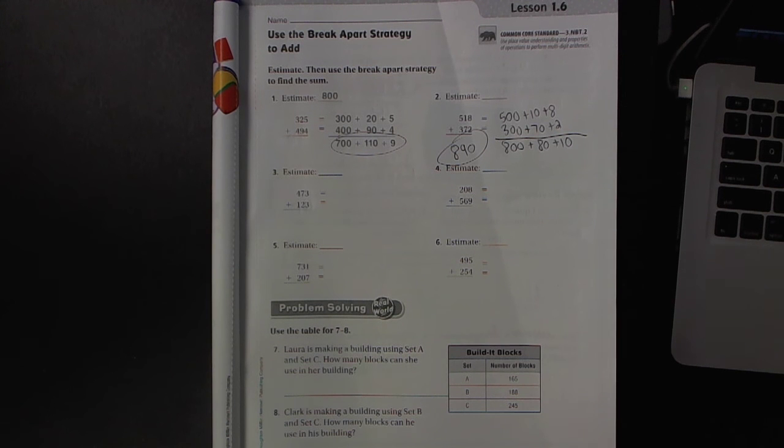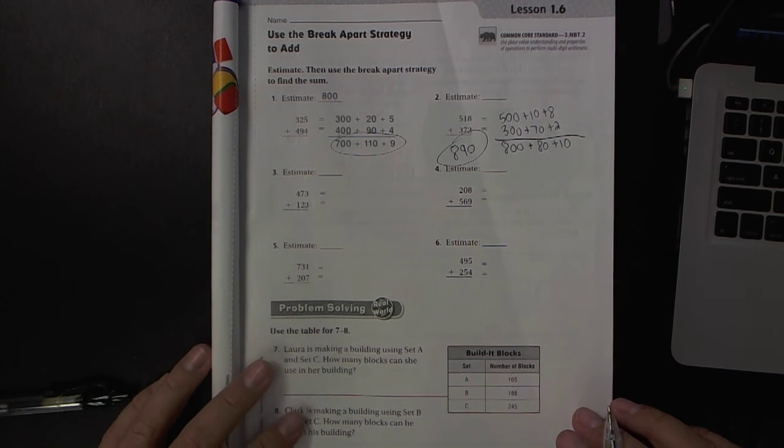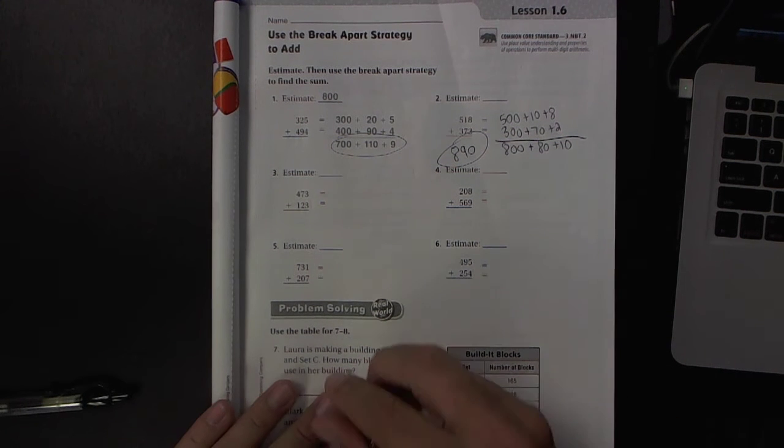Continue with the break apart strategy here for addition, Lesson 1.6. Number 3, you're going to want to break this apart by place value.